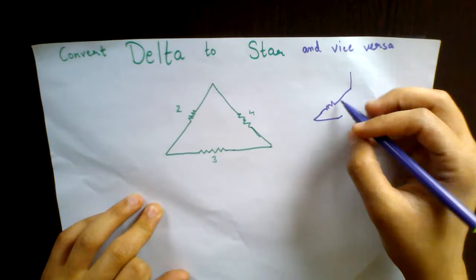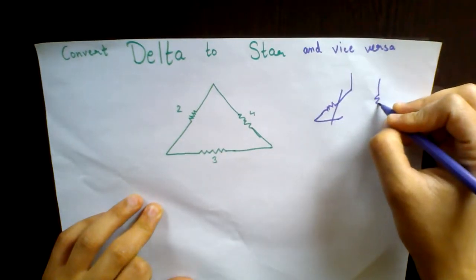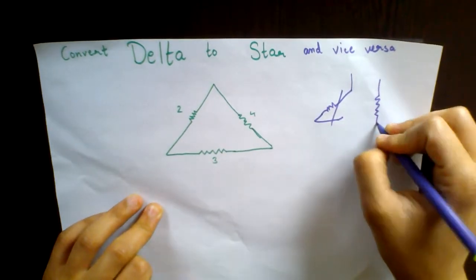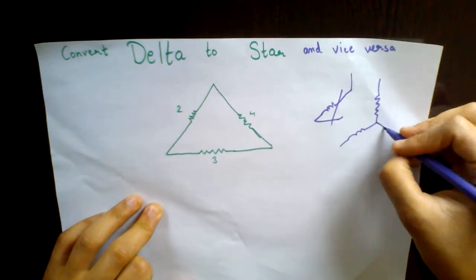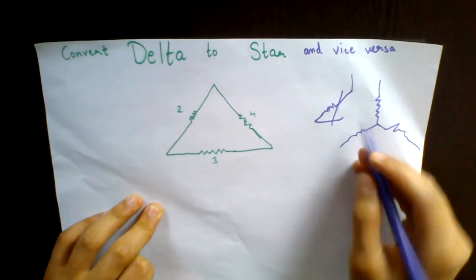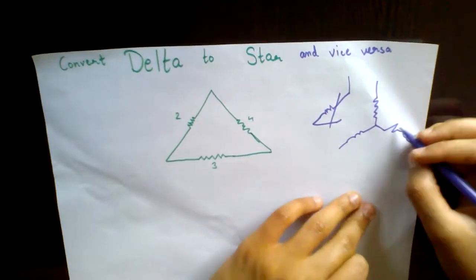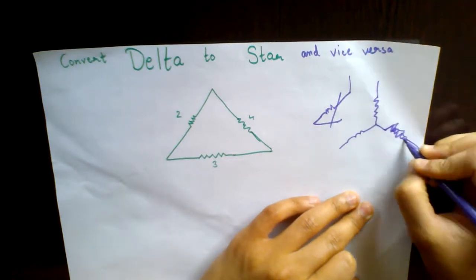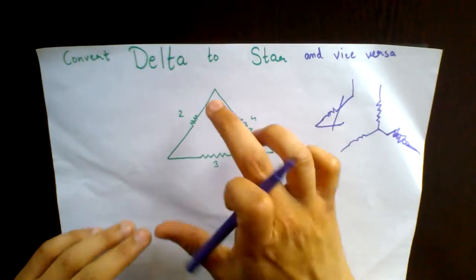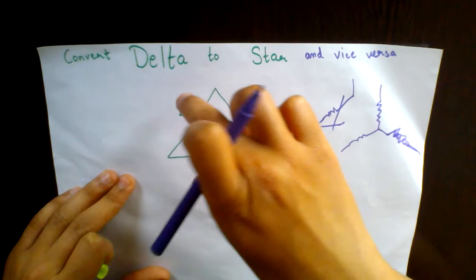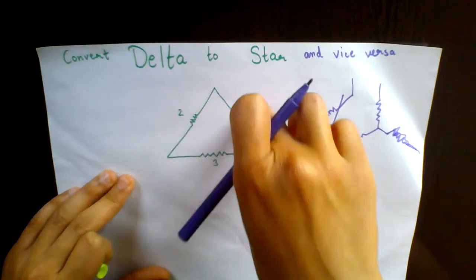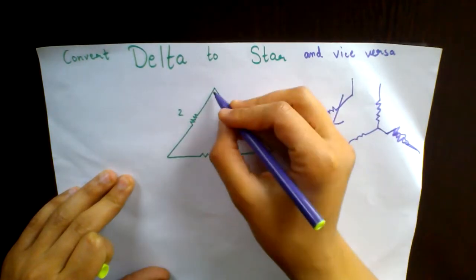I'm sorry, this is a star network. I was a little untidy here. Now, you want to convert this delta into a star network. What do you do first?